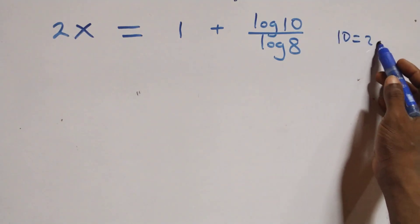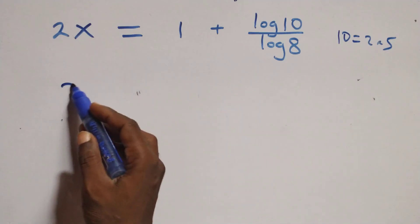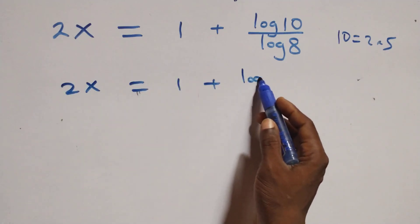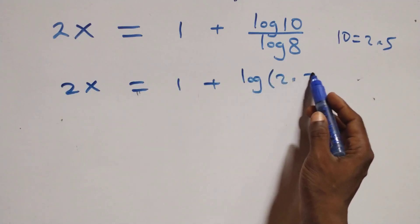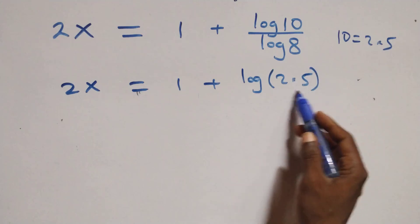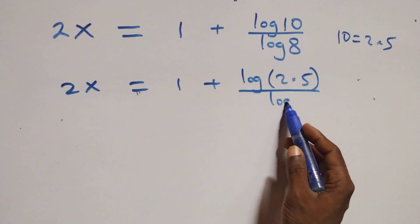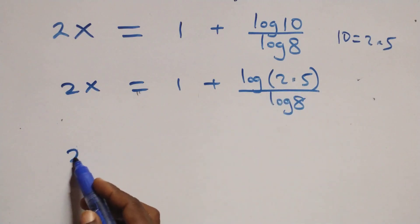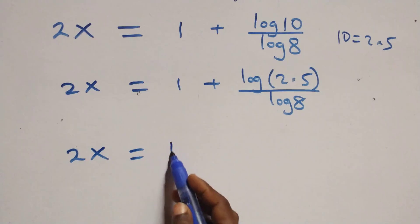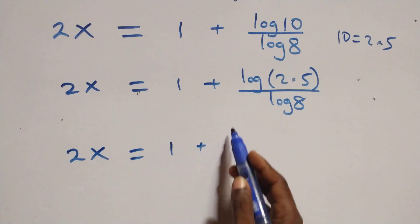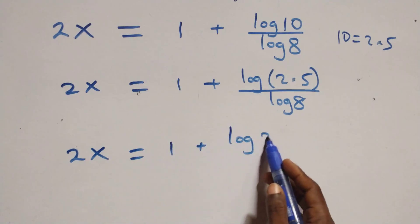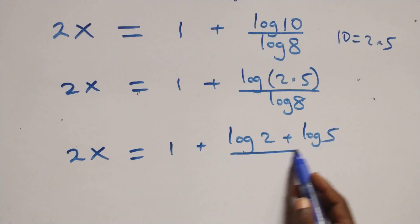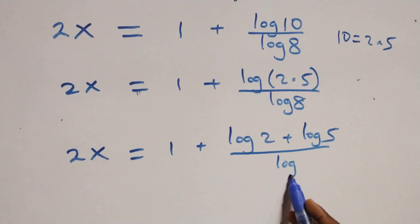Next, we can write 10 as 2 times 5, so this becomes 2x equals to 1 plus log(2 times 5) over log 8. Applying the log product rule again, we have 2x equals to 1 plus (log 2 plus log 5) over log 8.